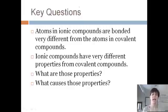So here's some key questions. Atoms in ionic compounds are bonded very different from atoms in covalent compounds. And because of this, they have very different properties. So what are the properties of ionic and covalent compounds? And what causes those properties?